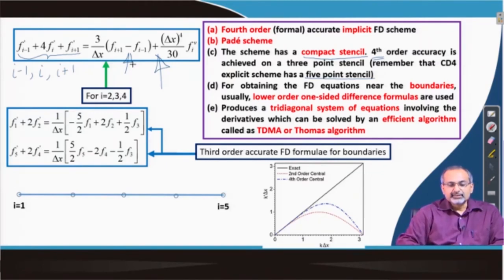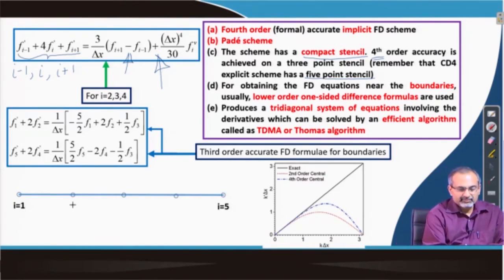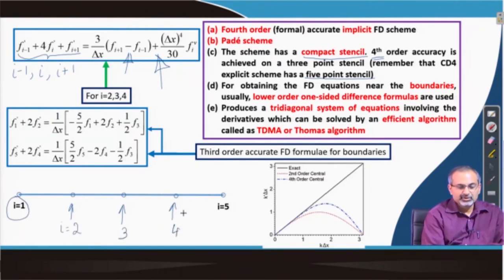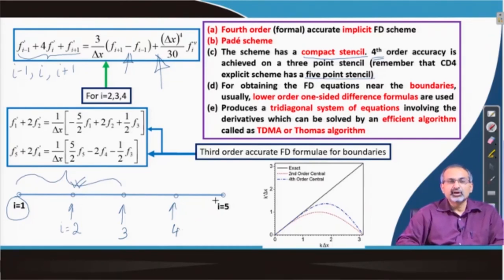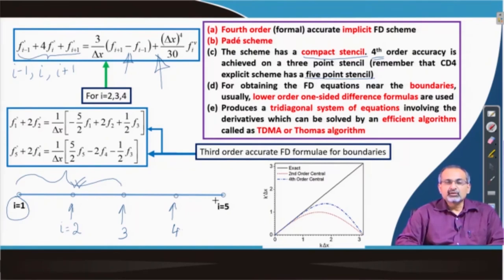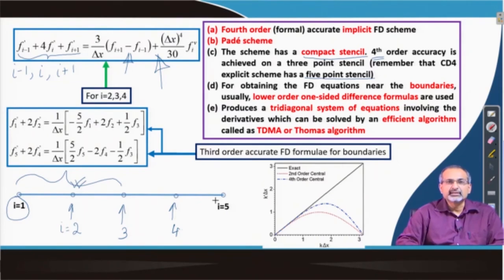When you apply this scheme to inner points of the domain — points like i equal to 2, 3, 4, provided the first grid point is i equal to 1 — you can happily use this scheme, because the stencil works out correctly at each interior point. However, when you move to the boundary points, this scheme will not work, because there will be a point at which the functional value and one of the derivatives required by the equation are not available. Therefore, you need a different way of defining the derivatives at the boundaries.